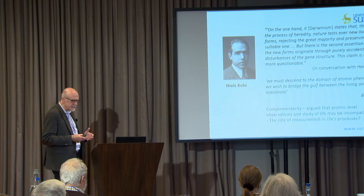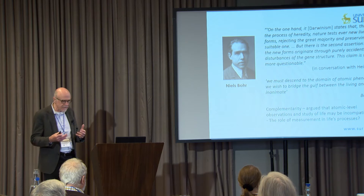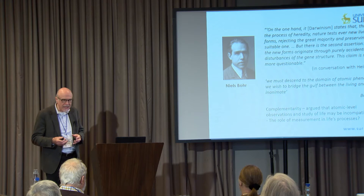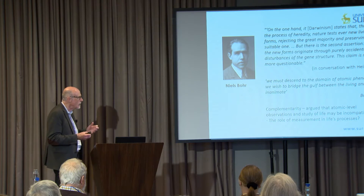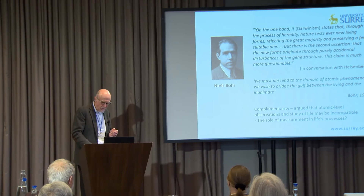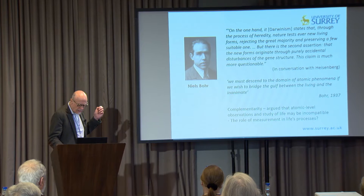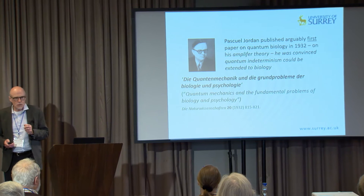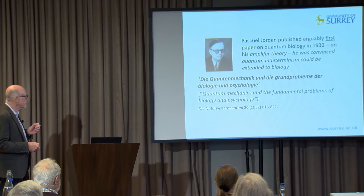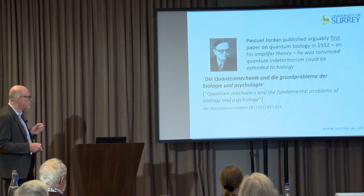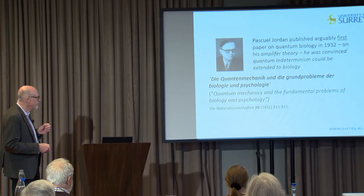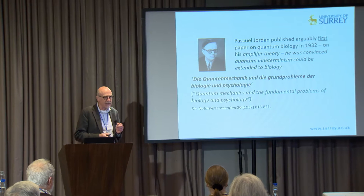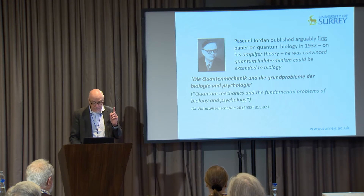Bohr was interested in the role of measurement, which had both a positive and negative role in his thinking. He thought biologists wouldn't be able to investigate living structures without disturbing them because of the uncertainty principle, but also that measurement may be involved in living organisms. He wasn't the first to write a paper on this - that was Pascal Jordan, who wrote the first paper on quantum biology in 1932: 'Quantum Mechanics and the Fundamental Problems of Biology and Psychology.'